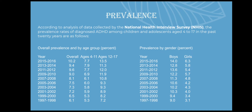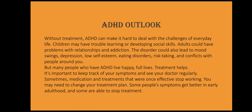Prevalence: According to analysis of data collected by the National Health Interview Survey, the prevalence rates of diagnosed ADHD among children and adults aged 4 to 17 in the past 20 years are shown by age group and by gender. Many children with ADHD also have other disorders. According to a 2016 survey, 6 in 10 children with ADHD had at least one other mental, emotional, or behavioral disorder. About 5 in 10 children with ADHD had a behavioral or conduct problem. About 3 in 10 children with ADHD had anxiety. Other conditions affecting children with ADHD include depression, autism spectrum disorder, and Tourette's syndrome.